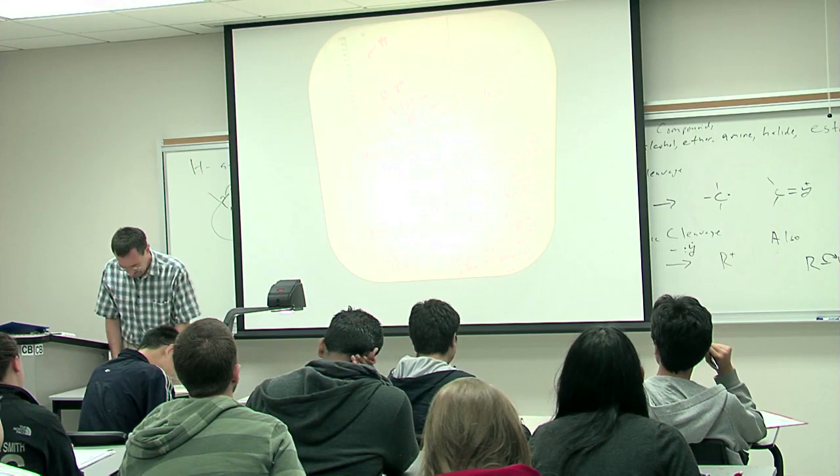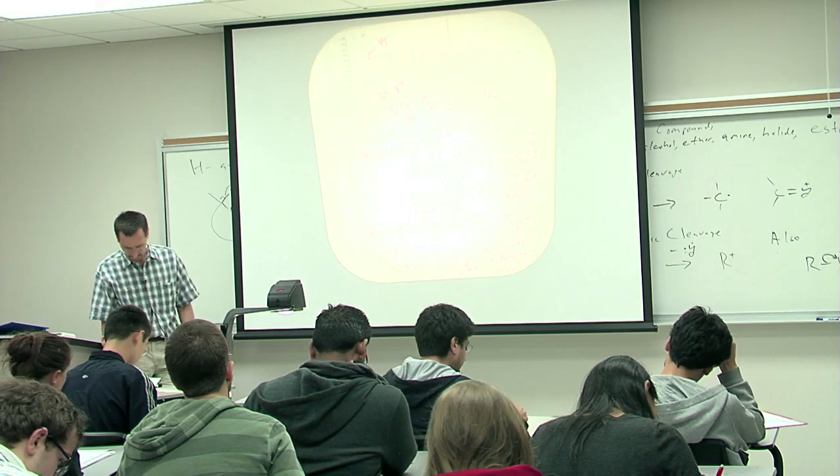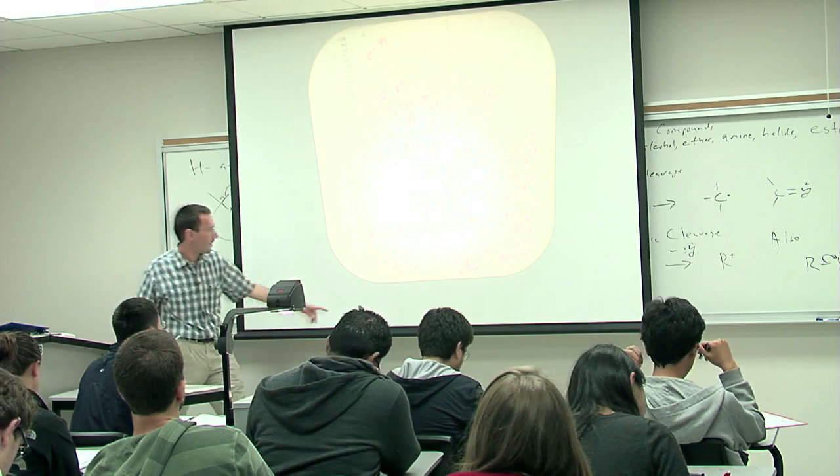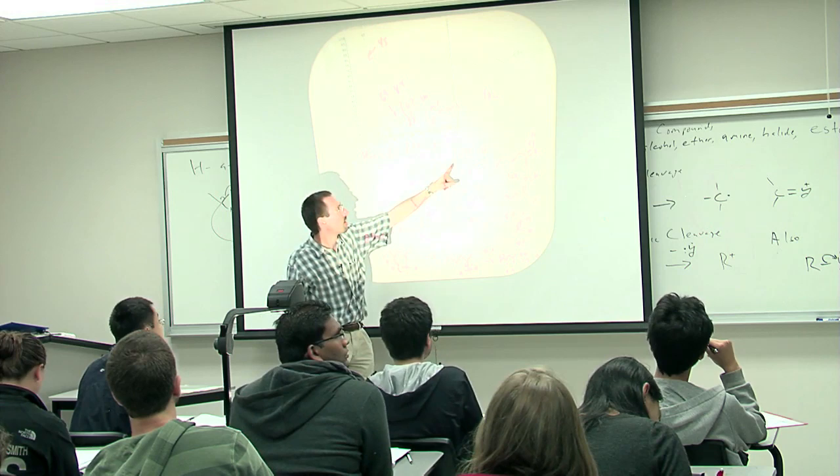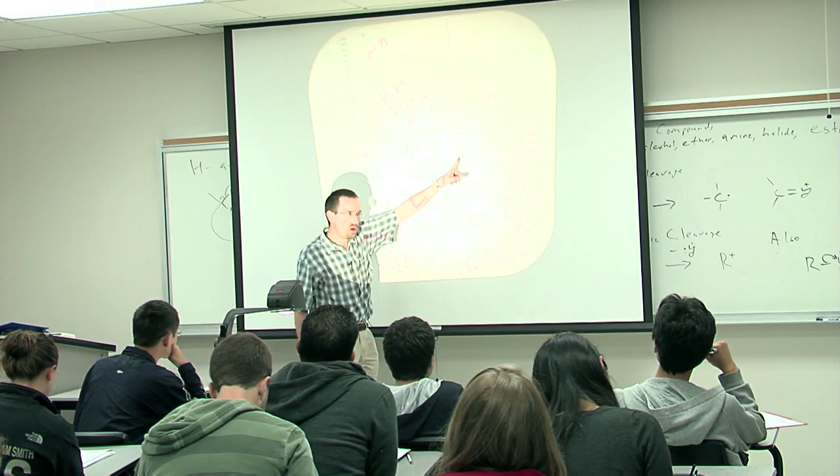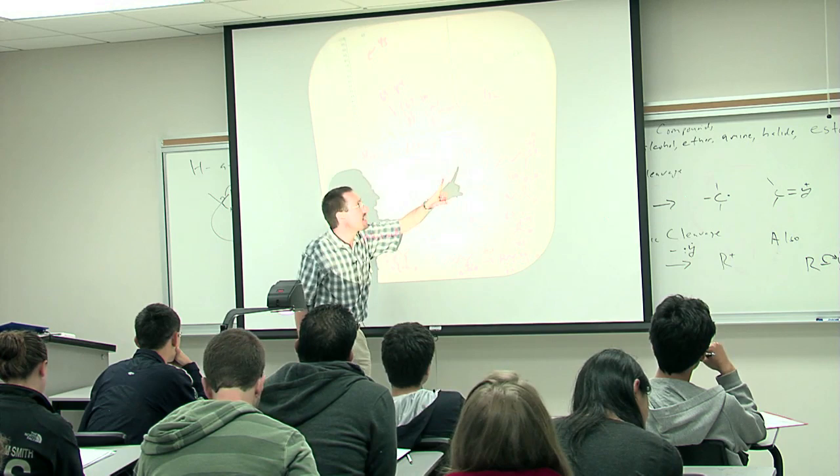Can you not have that heterolytic cleavage where you just generate the O plus and just have that as a leaving group? The heterolytic cleavage. Beautiful, beautiful question. So the question is, can we also have loss of OH dot? And the answer is you have a tiny amount over here, not enough to give a big peak.